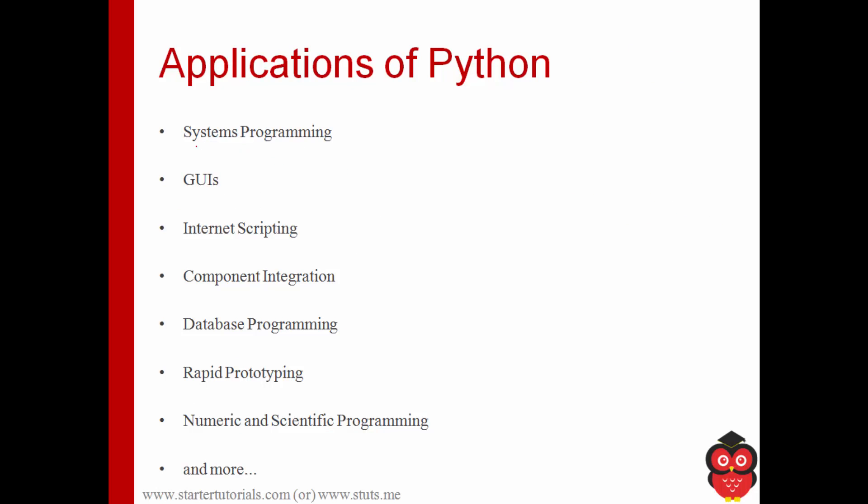Now, let's look at some of the applications of Python. Python can be used for system programming. Means it can be used to develop system software like operating systems, compilers, loaders, etc. It can be used for developing graphical user interfaces. It can be used for developing websites using frameworks like Django. As discussed earlier, it can be used for component integration.